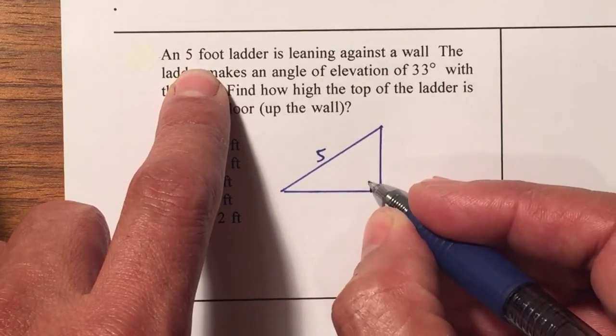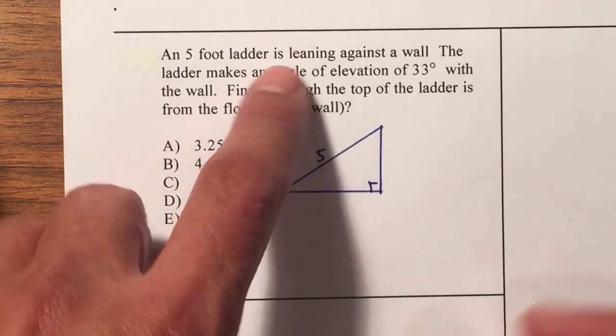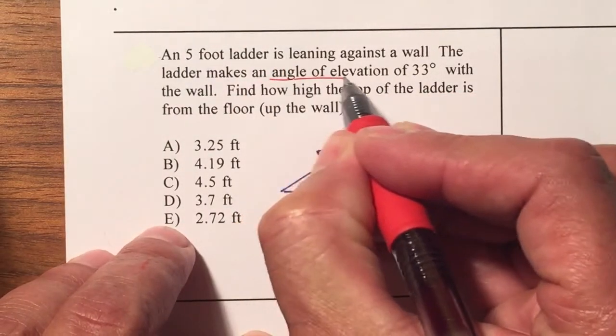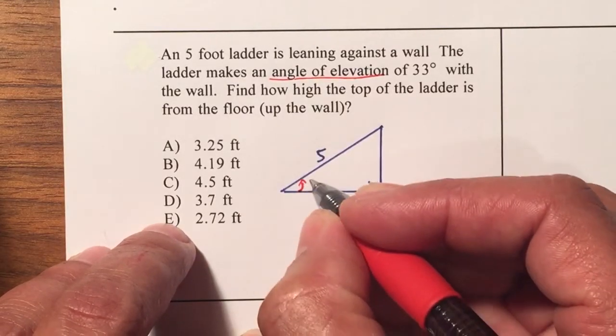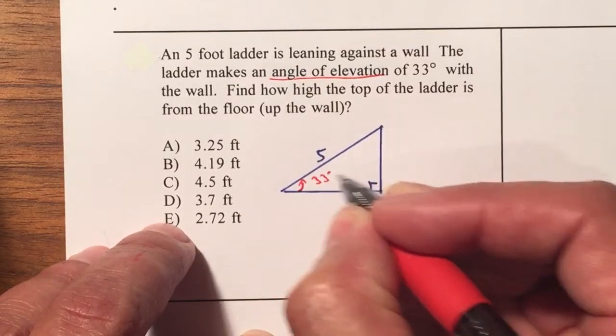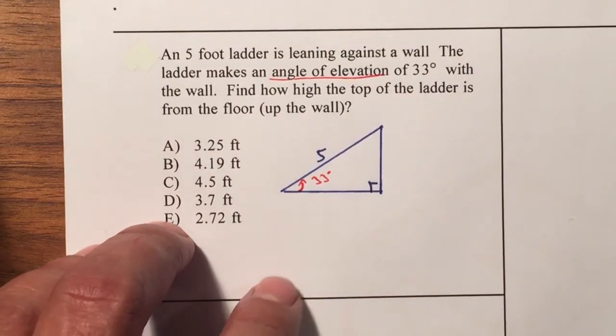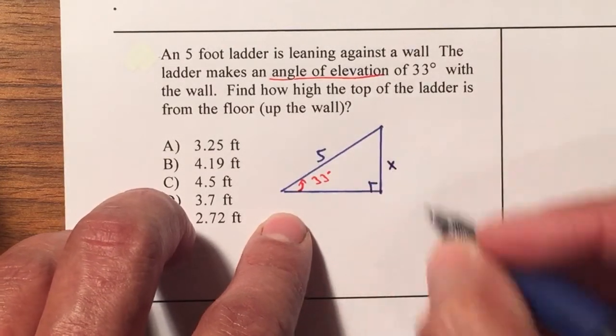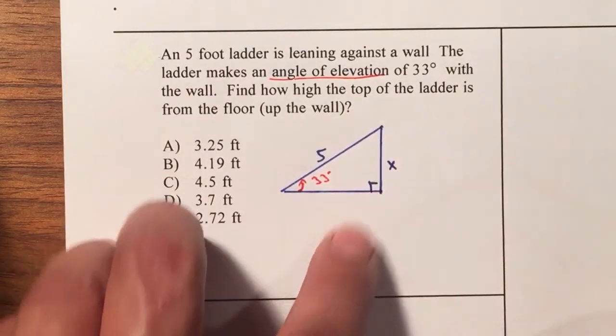This is a right angle so we're dealing with a right triangle and the angle of elevation. Now remember your angle of elevation you are elevating so they're talking about this angle here. This is 33 degrees and we're trying to find that height of the ladder from the floor. So we're trying to find this length.